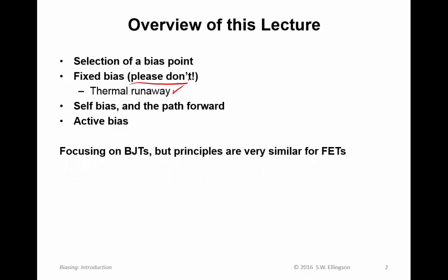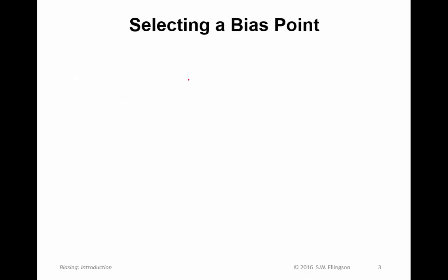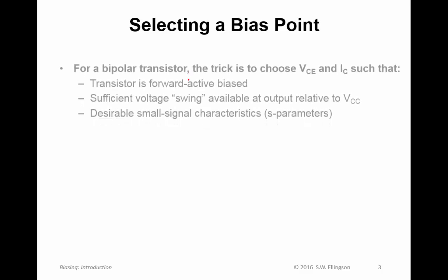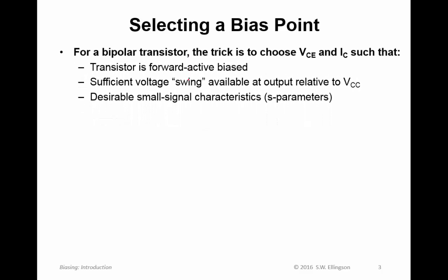In this lecture I'm going to be focusing on bipolar transistors, but the principles are very similar for FETs. Okay, first selecting a bias point. For a bipolar transistor, selecting a bias point means choosing an appropriate and desirable value of the collector emitter voltage and the collector current. And of course if we're talking about FETs, then we're talking about VGS and I sub D.